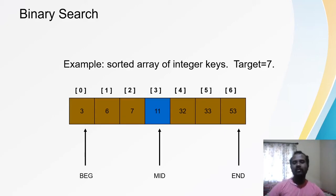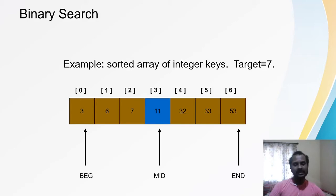Now, how to calculate the mid of the array? The mid can be calculated as (beginning + end) / 2. Here beginning is 0 and ending is 6, so 0 plus 6 divided by 2 gives 3. So 3 is my mid index, meaning data[3] is 11 — that is my mid element.